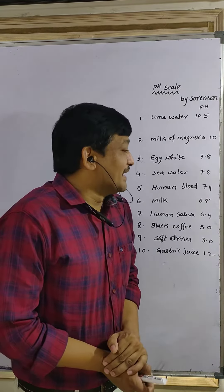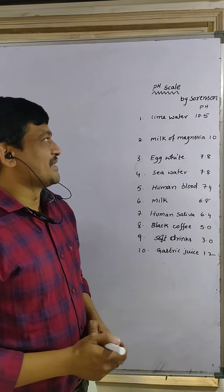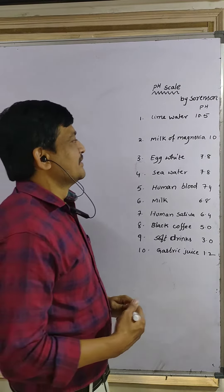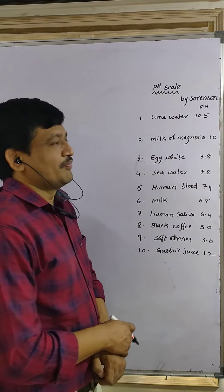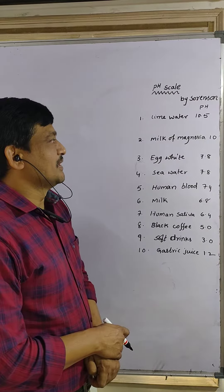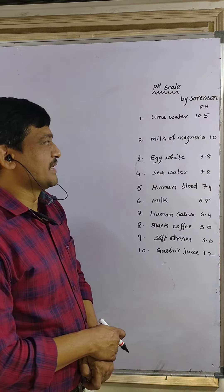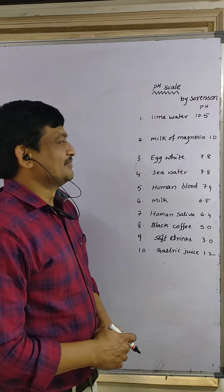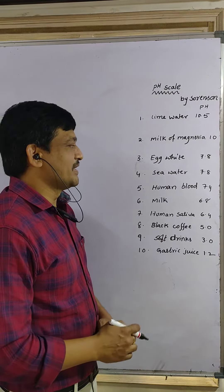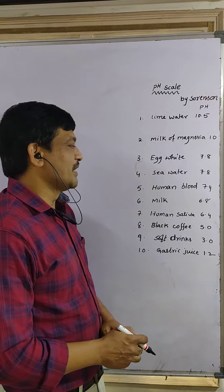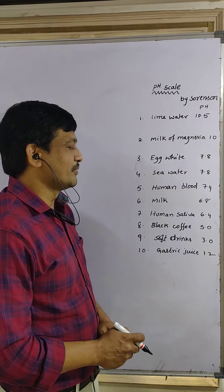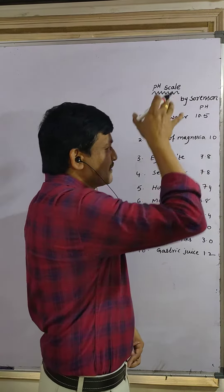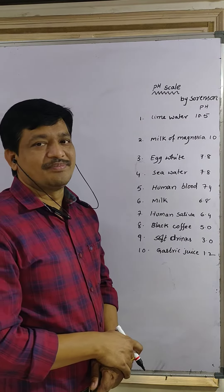Lime water has a pH of 10.5. Milk of magnesia — MgO plus water — that is called milk of magnesia, has a pH of 10. Egg white is 7.8, sea water is 7.8, and blood is 7.4. These all have pH values greater than 7, so they are bases.